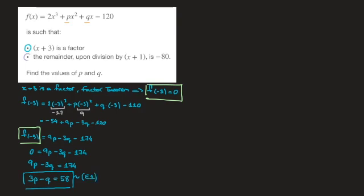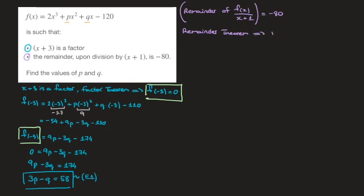Moving on to the second bit of information: the remainder upon division by x plus 1 is negative 80. The Remainder Theorem tells us that f of negative 1 has to be equal to negative 80. This means that if we replace every x inside f of x by negative 1, the result has to equal negative 80, leading to our second equation involving p and q.